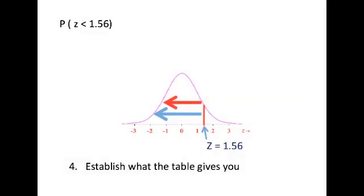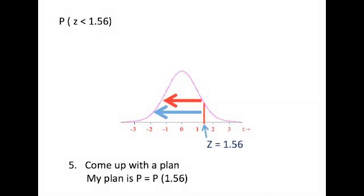Once I've identified the area I'm looking for, I have to identify what the table actually gives me. The table provides, for a z-score, all of the area to the left. And lo and behold, that is exactly the area I'm looking for. Since the area the table gives me is what I'm looking for, my plan is: P(z < 1.56) equals the table value for 1.56.